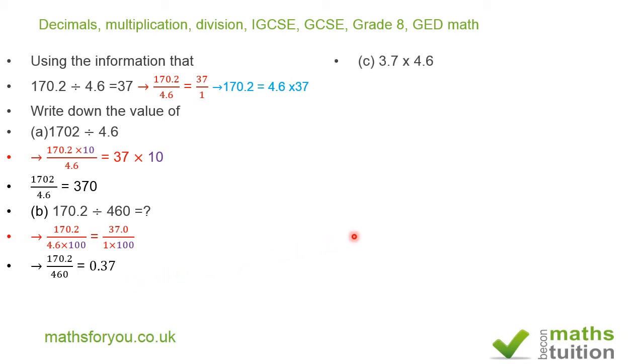Now for part C: 3.7 times 4.6. I'm going to use the strategy in blue. On the right-hand side, we've got 4.6 times 37, but we want 3.7 there. So to get 3.7, I need to divide 37 by 10.